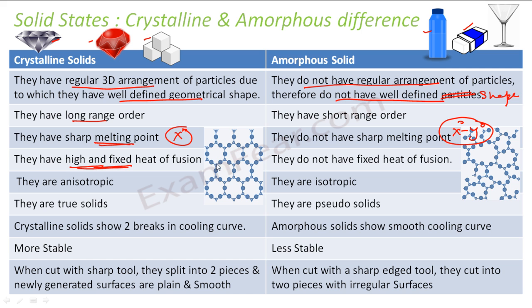Crystalline solids have a fixed and very high heat of fusion — high because they are symmetrical and very strongly bonded. Amorphous solids have a small heat of fusion, and they do not have a fixed heat of fusion.